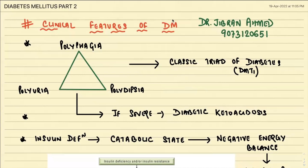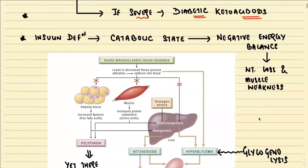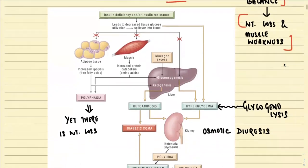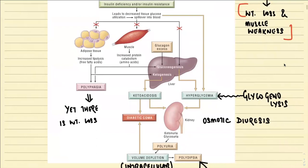The clinical features of diabetes mellitus are characterized by the classical triad: polyphagia, polyuria, and polydipsia. This triad is seen mainly in type 1 diabetes mellitus, and if severe, it leads to diabetic ketoacidosis. Since insulin is an anabolic hormone, its deficiency leads to a catabolic state, inducing a negative energy balance with weight loss and muscle weakness. Let us understand the cause of each component of this triad.